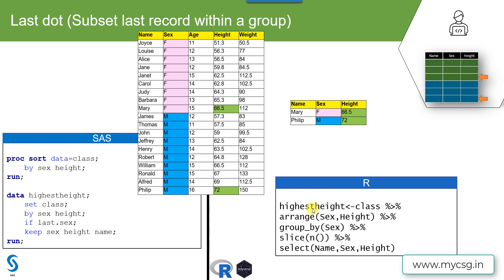Now we'll see how to replicate this concept in R. We use the class dataset and pass it to the arrange function, which is used for sorting observations. We specify sex and height for sorting the records. Then we pass the resulting sorted dataset to the group_by function, which creates groups for females and males. Next we use the slice function, which subsets a specific record based on its position.